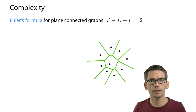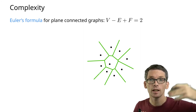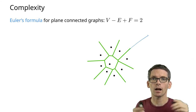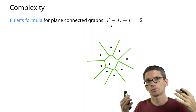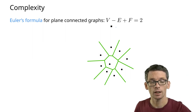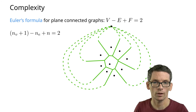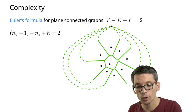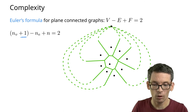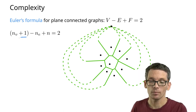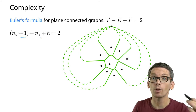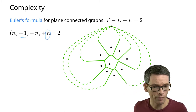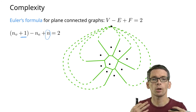We want to apply Euler's formula to the Voronoi diagram. The problem is that Voronoi diagrams have infinite edges that don't have a vertex at one end. To handle this, we add a dummy vertex — say, a vertex at infinity — and link all infinite edges to that vertex. Now Euler's formula holds: vertices minus edges plus faces equals 2. We have one extra dummy vertex, and one face for every input point, so the number of faces is n.